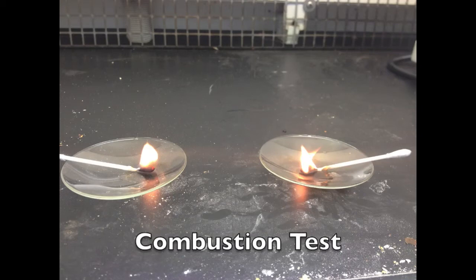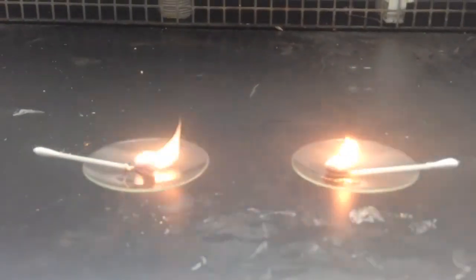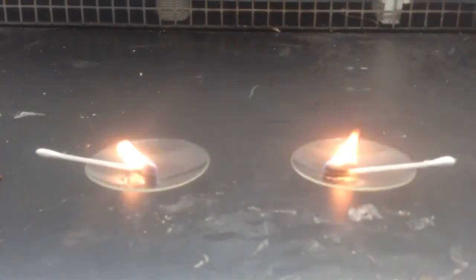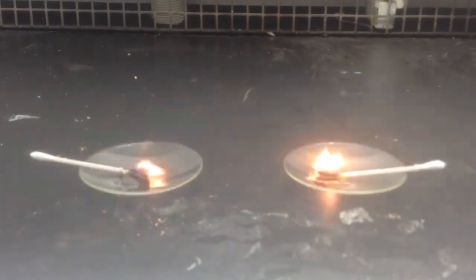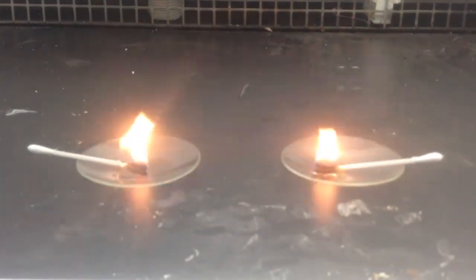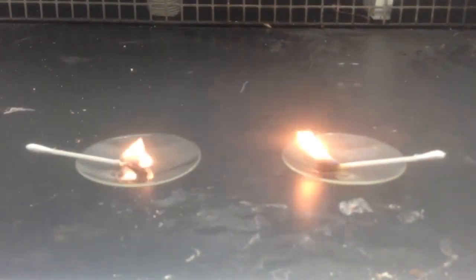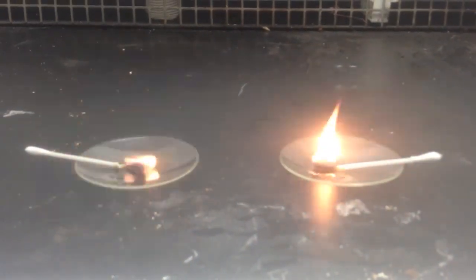Next, you will do a combustion test. Obtain two cotton swabs and dip one into your biodiesel and the other into your starting seed oil. In the fume hood, light the two cotton swabs. Make observations on how long it took to start combustion, the color of the flame, and the presence of soot or particulates formed during combustion. Also record how many seconds it took for each swab to extinguish.